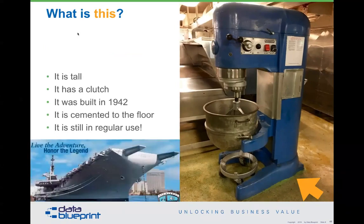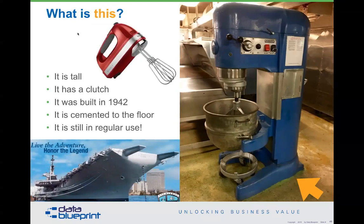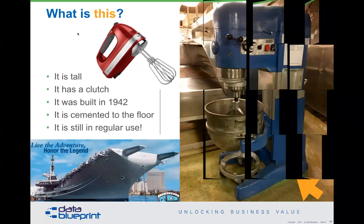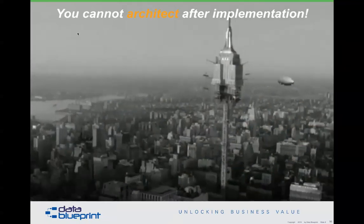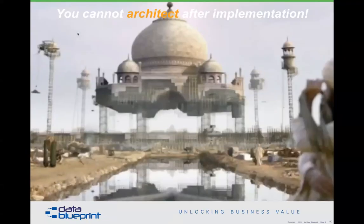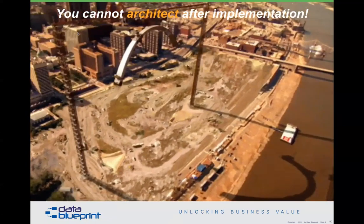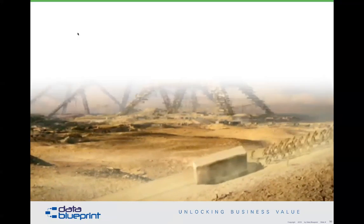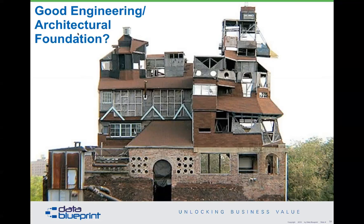In 1942, we were losing World War II very badly. We put 4,000 war fighters on this ship and sent them off to save the world. These folks needed breakfast, lunch, and dinner every day — and this is the answer to how do you make sure 4,000 people can be fed every day for an indeterminate amount of time. You simply cannot use one KitchenAid to make breakfast for 4,000 people. This leads to the situation where you can't architect after implementation.